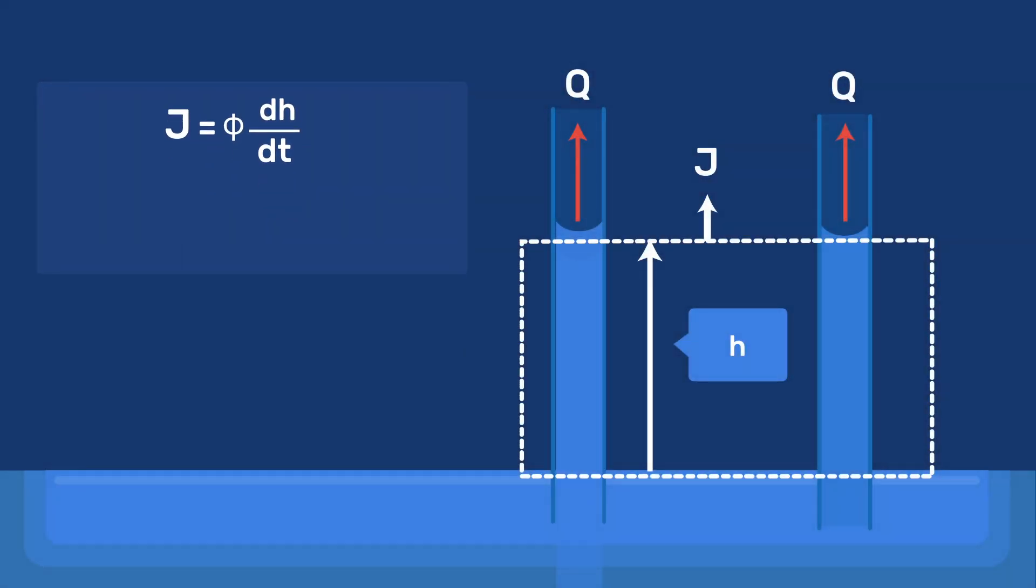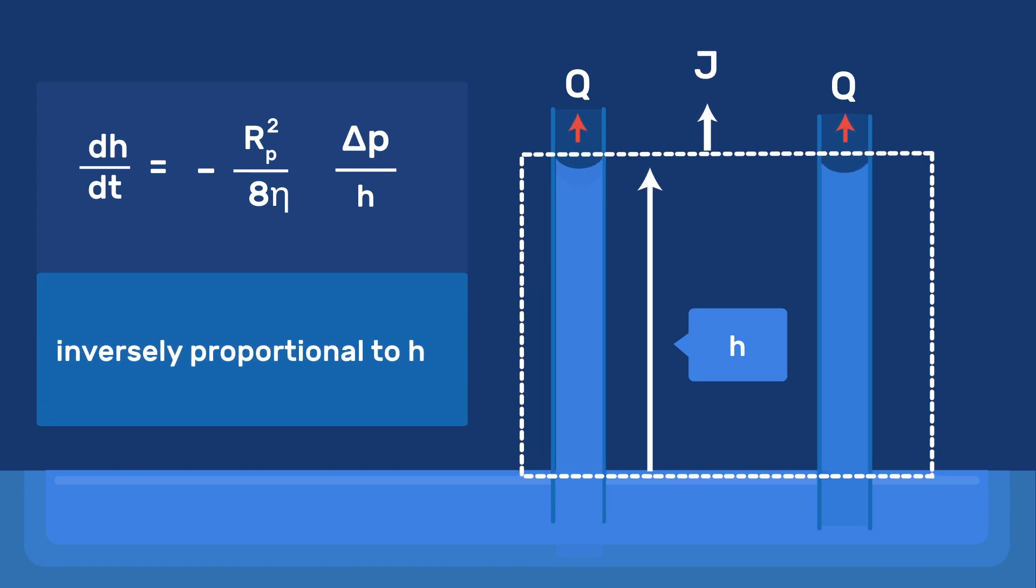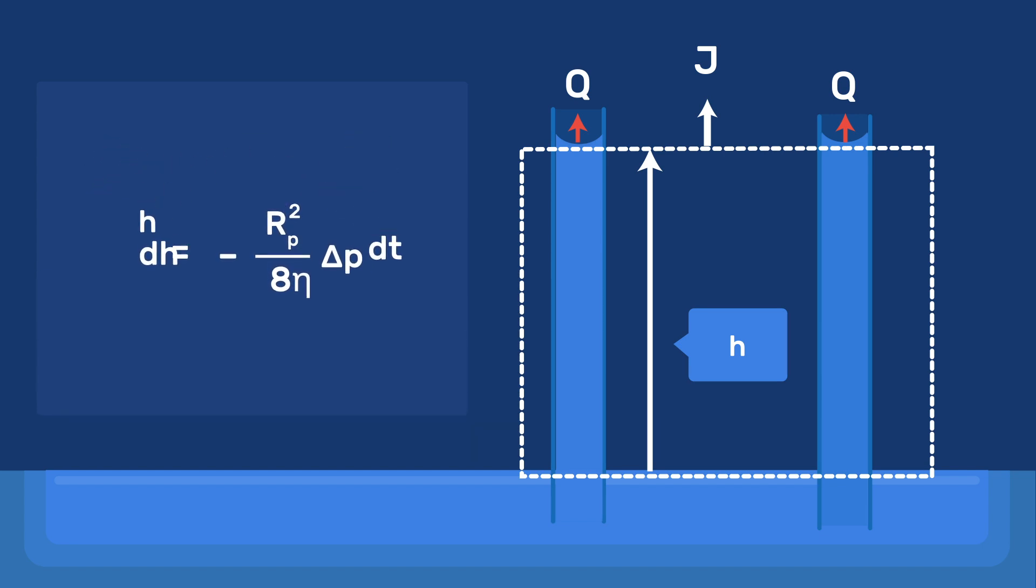Previously, we had obtained another expression for j, giving it as a function of delta p. If we now combine both equations and rearrange them, we find that the rate of rise, dh over dt, is inversely proportional to h, so that the rate decreases as the water rises higher.